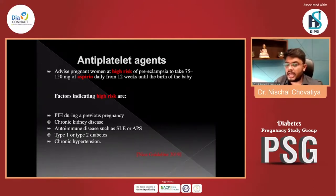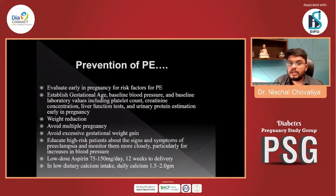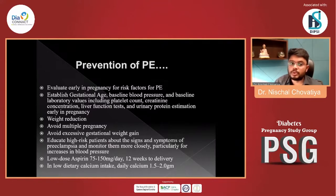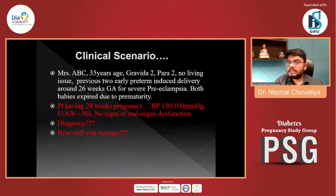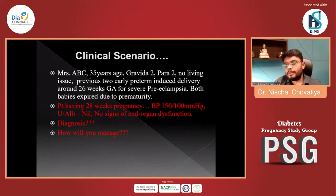Anti-platelet agents: aspirin is indicated in mild, moderate, or high-risk patients; we can start with 75 mg and increase to 150 mg. To prevent preeclampsia, evaluate early in pregnancy for risk factors, establish gestational age, do routine workup, weight reduction, avoid multiple pregnancies, avoid excessive gestational weight gain, and educate high-risk patients about signs and symptoms. Low-dose aspirin — 75 mg per day from 12 weeks to delivery — and daily calcium allowance of 1.5 to 2 grams.